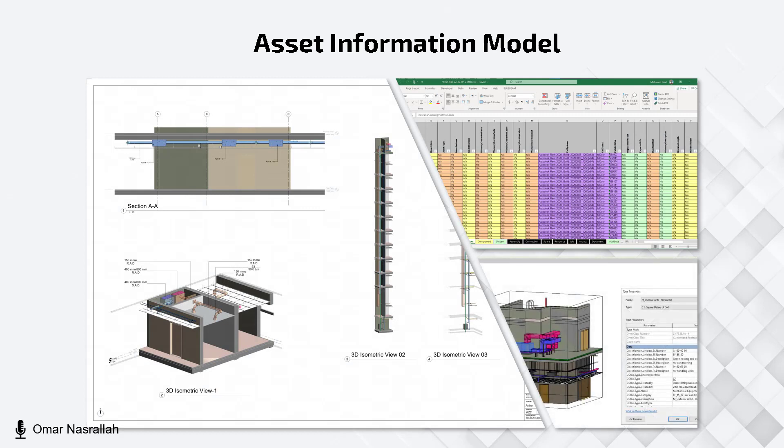The Excel COBIE spreadsheet included all contacts who worked on the project, in addition to project information covering levels, floors, spaces, types, components, and other systems. For elements and project classification, we used UniClass 2015.